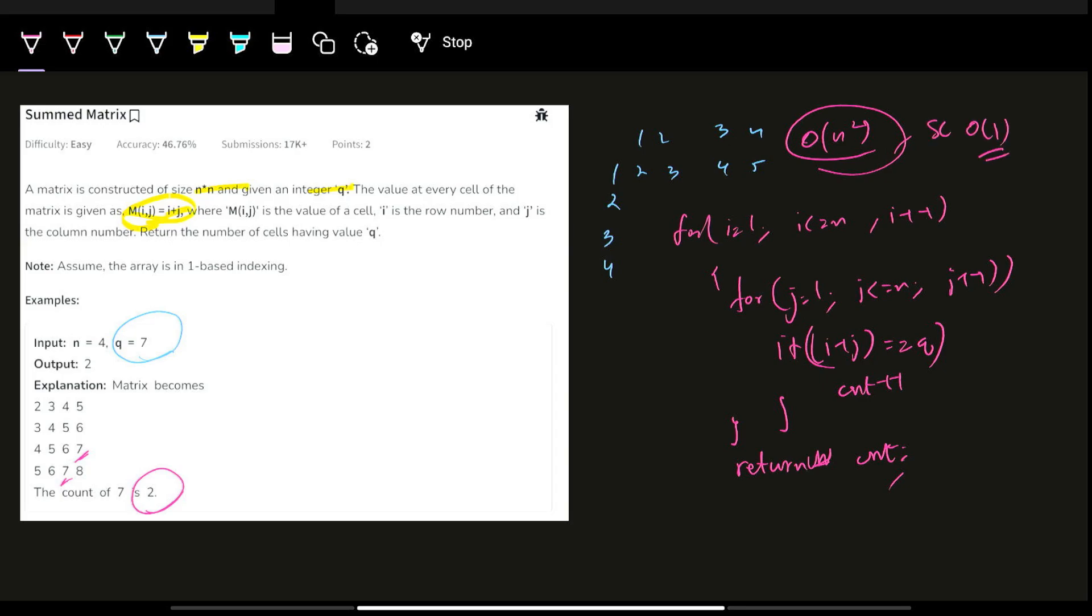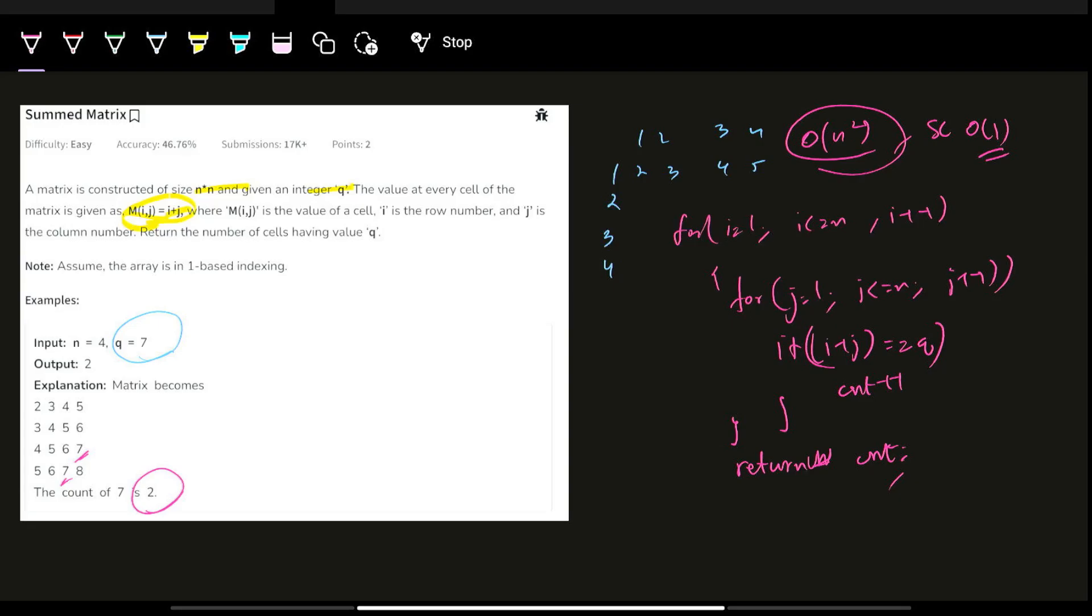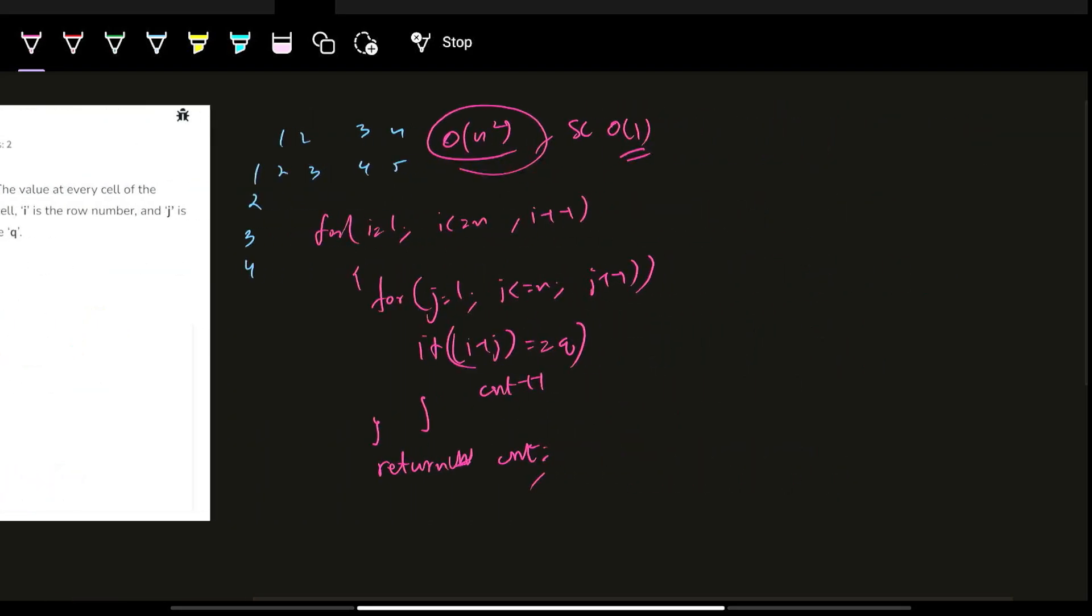Let's see the constraint and decide will the solution be submitted or not. If you see the constraint, n is 10 power 18, right? So we will do constraint analysis here. 10 power 18 whole square is nothing but 10 power 36, which is much, much greater than 10 power 8. To have our solution submitted, the number of iterations should be less than 10 power 8. Then only we get a successful submission. Otherwise, we will get TLE.